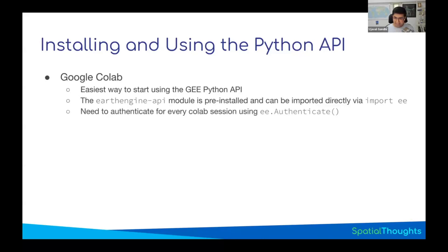One downside of Python is that every time you run in Colab, you have to authenticate. When you authenticate, you get a token saved on the computer where you're running. If you're running on your own computer, this is a one-time process. In Colab, every time you open a new tab you get a new machine, and once you close the tab that machine is wiped clean. That's why you have to authenticate every time — it's a bit painful. The only official way is to authenticate each session.